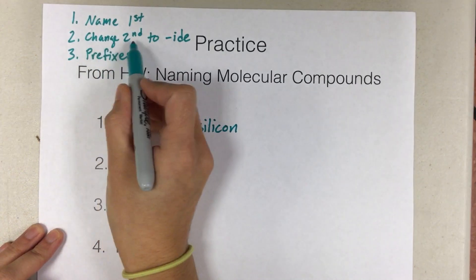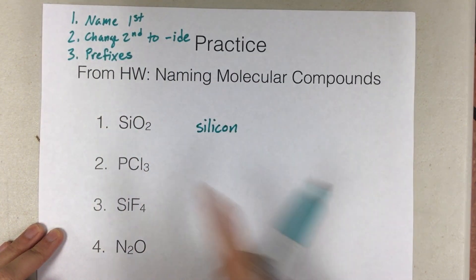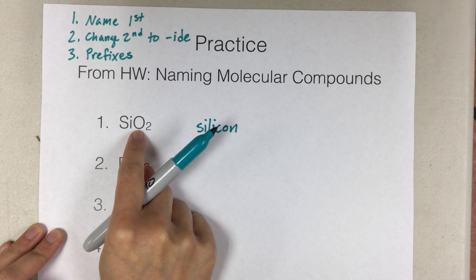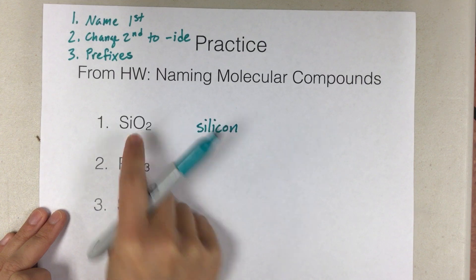Second step, change the second to -ide. So our second element is oxygen. So we just need to change the ending to -ide. So instead of oxygen, it will be oxide.